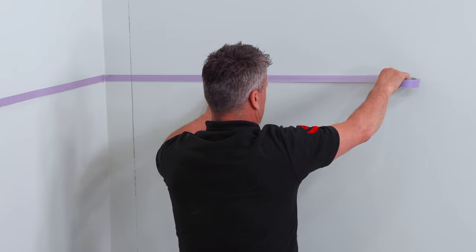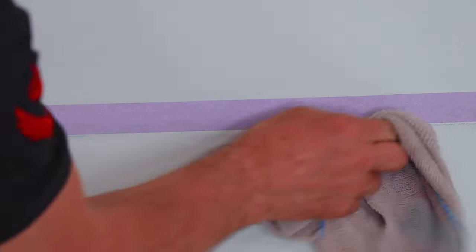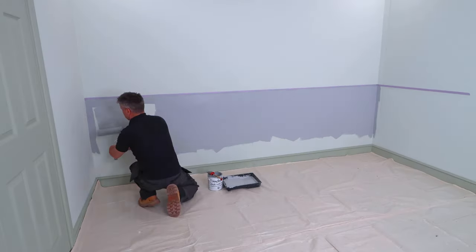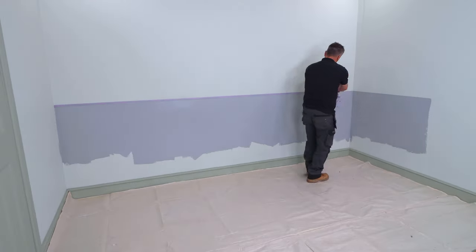Then apply a piece of masking tape across, wipe off the pencil line, then you can start to apply your first coat of paint. This creates a perfect line across the wall once you've removed your masking tape.